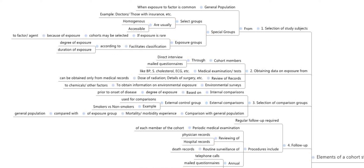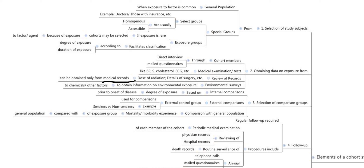The second step is obtaining data on exposure from cohort members. This is done through direct interview, mailed questionnaires, medical examination, or tests such as blood pressure, serum cholesterol, and ECG. Data on exposure can also be obtained from review of records — for example, details of surgery or dose of radiation, which can only be obtained from medical records. Environmental surveys can also be conducted to obtain information on exposure to chemicals or other factors.